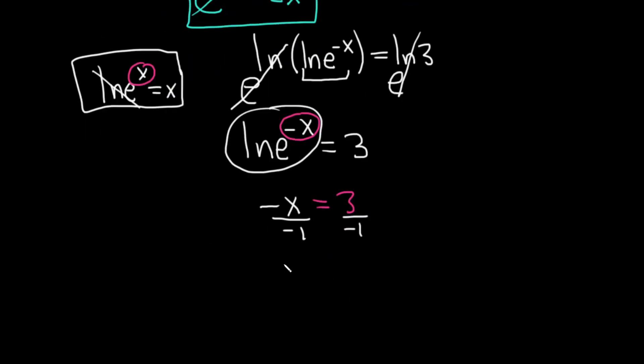And then we're left with x equals, and then 3 divided by negative 1 is negative 3. And that would be the final answer. Good luck.